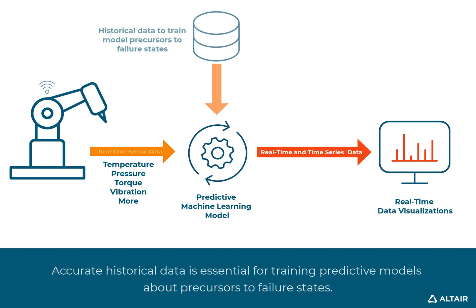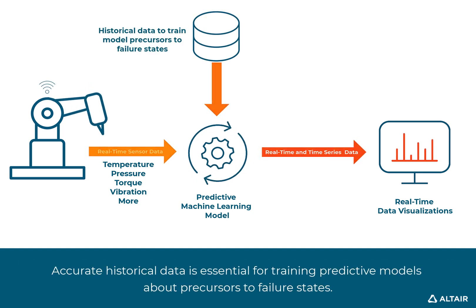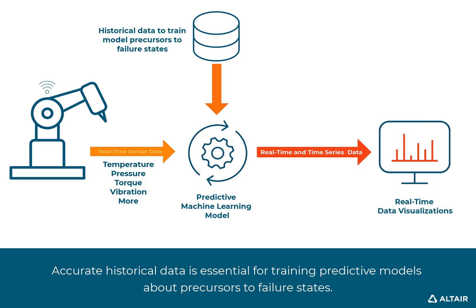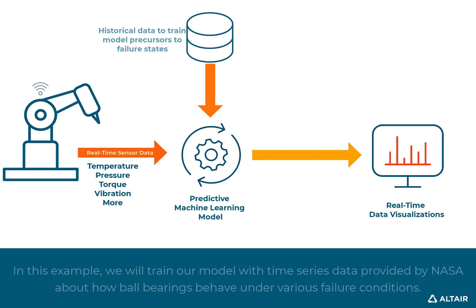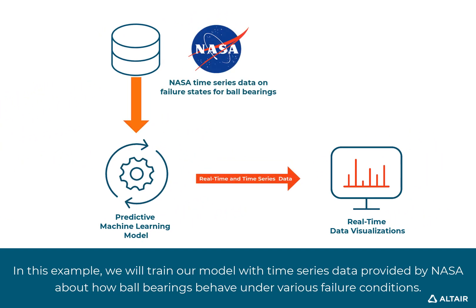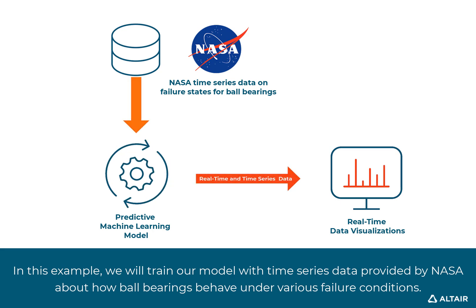Accurate historical data is essential for training predictive models about precursors to failure states. In this example, we will train our model with the time series data provided by NASA about how ball bearings behave under various failure conditions.